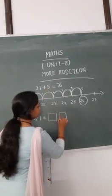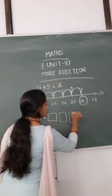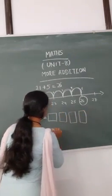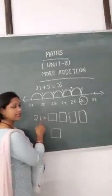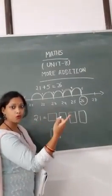1, 2, 3, 4, and here is the 5th box. So after 21, what I will do? I will go forward by counting.